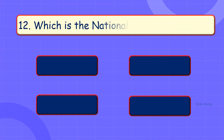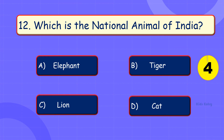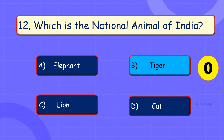Which is the national animal of India? A. Elephant. B. Tiger. C. Lion. D. Cat. Answer is Option B: Tiger.